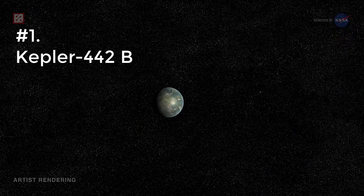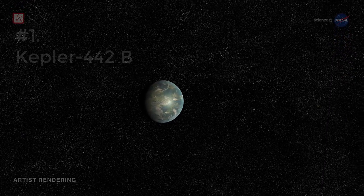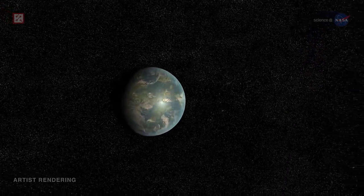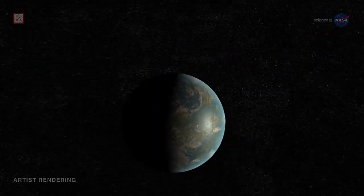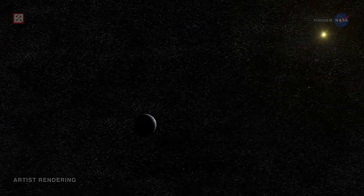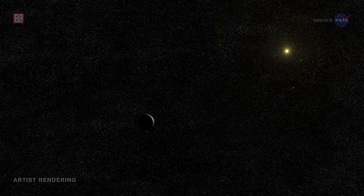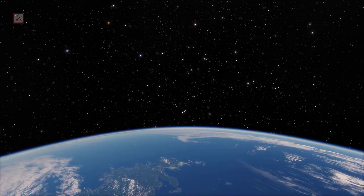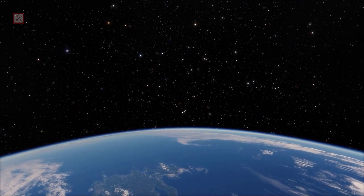Number 1: Kepler-442 b. Kepler-442 b is a confirmed near-Earth-sized exoplanet, likely rocky, orbiting within the habitable zone of the K-type main sequence star Kepler-442. This planetary system is about 1,206 light-years away from Earth and can be seen in the constellation Lyra. Kepler-442 b was discovered by NASA in January 2015.